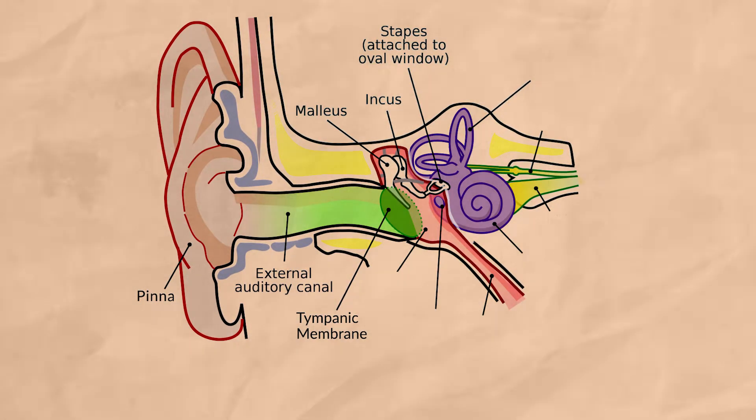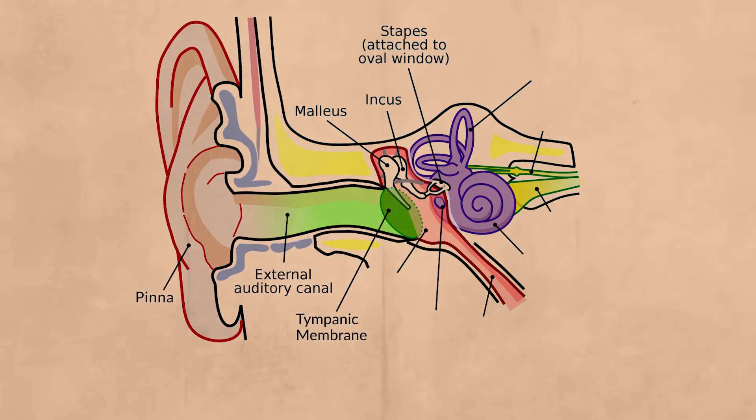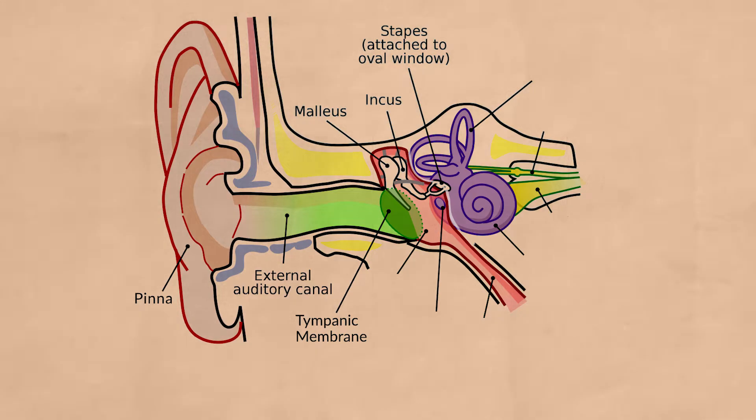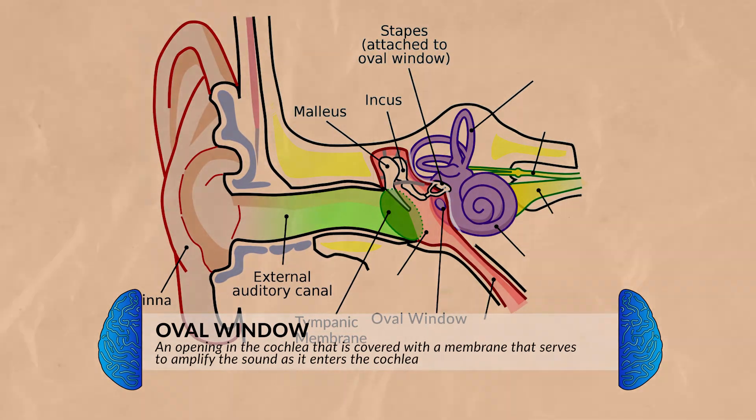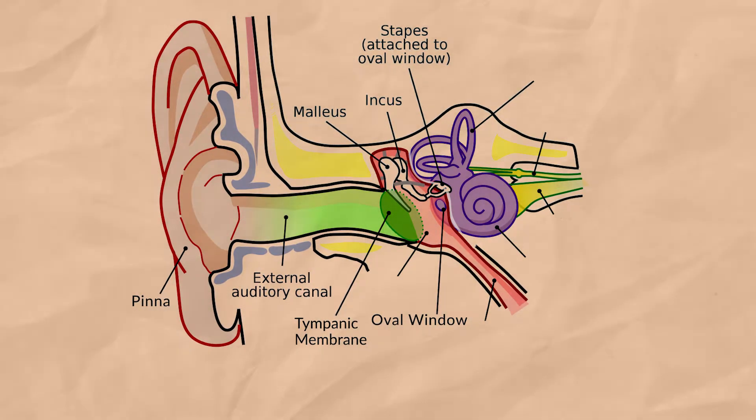One of the reasons why the sound needs to be amplified is because the inner ear contains a liquid, and it's more difficult to move vibrations through water compared to air. Sitting between the middle ear and the start of the inner ear is the oval window. This is an opening in the wall of the cochlea, and it's covered with a membrane that helps with the amplification of sound, sending waves into the inner ear.